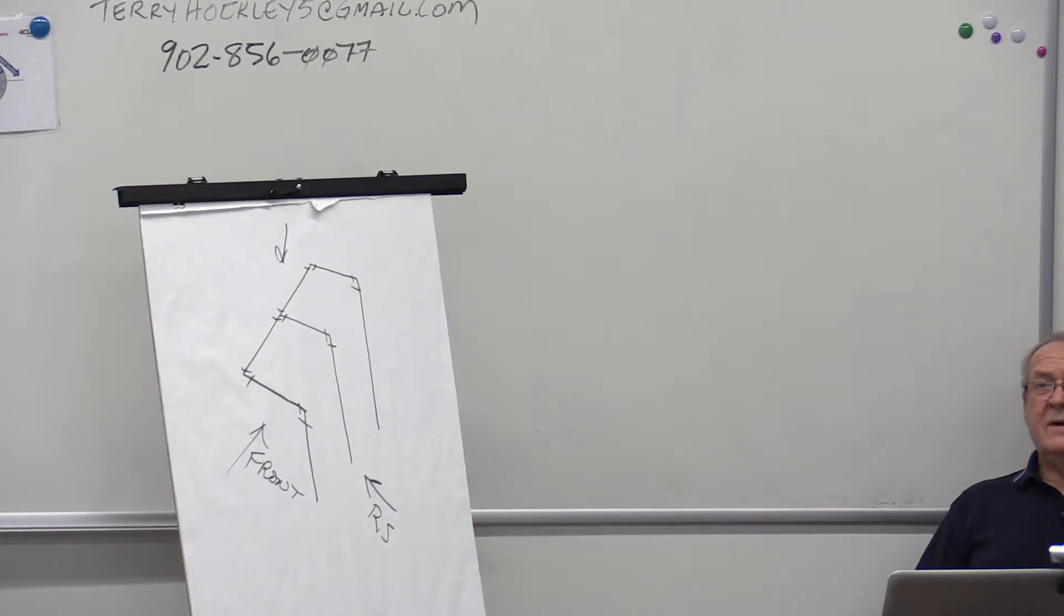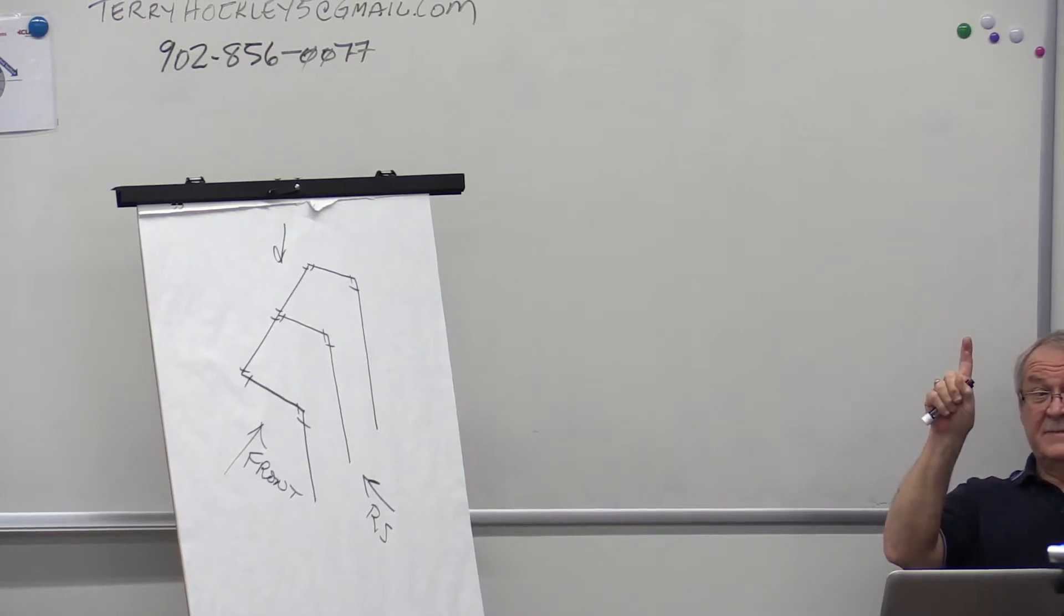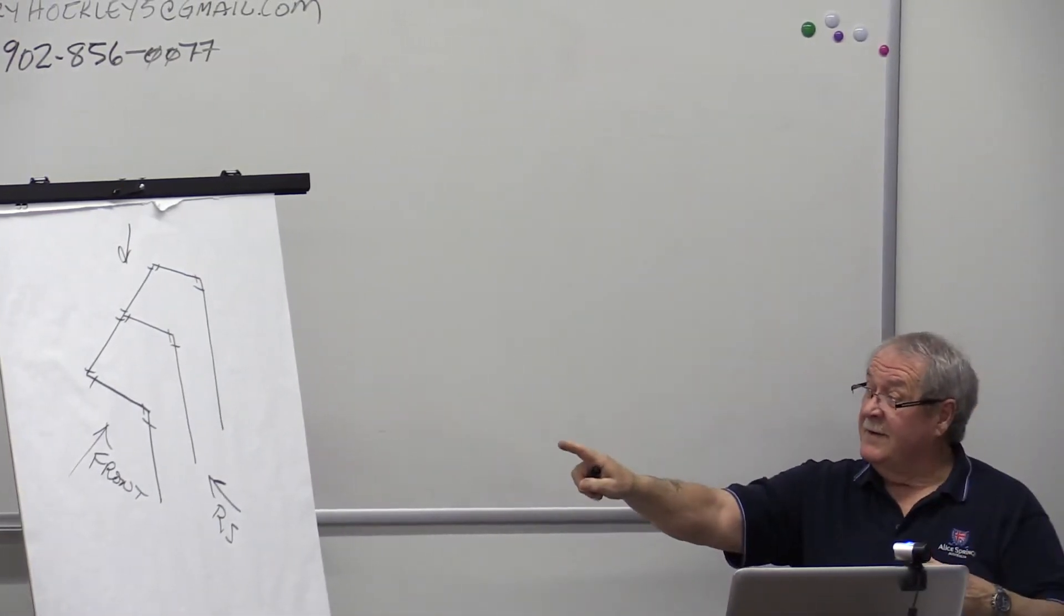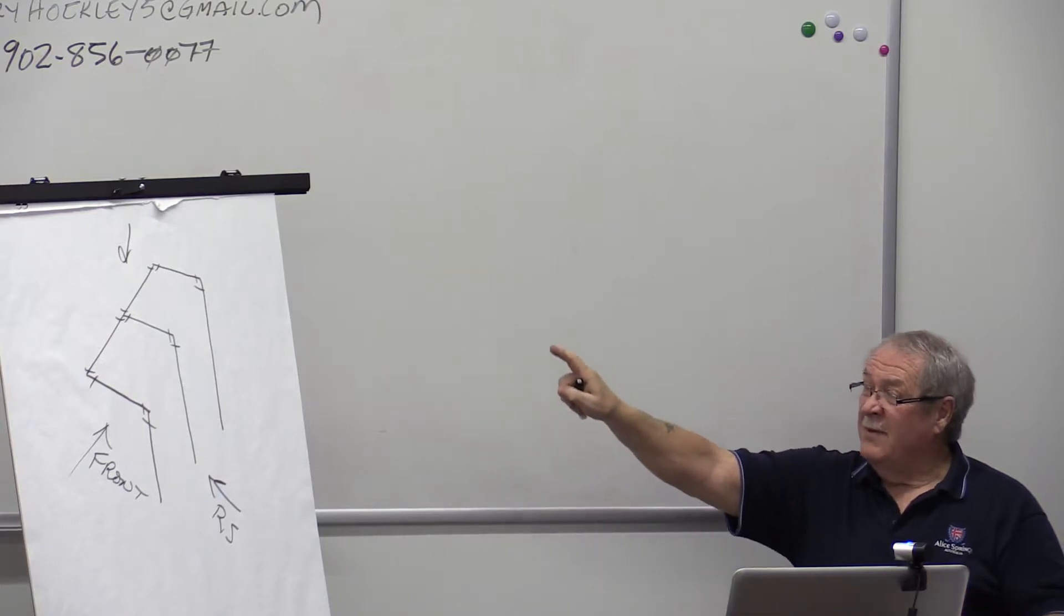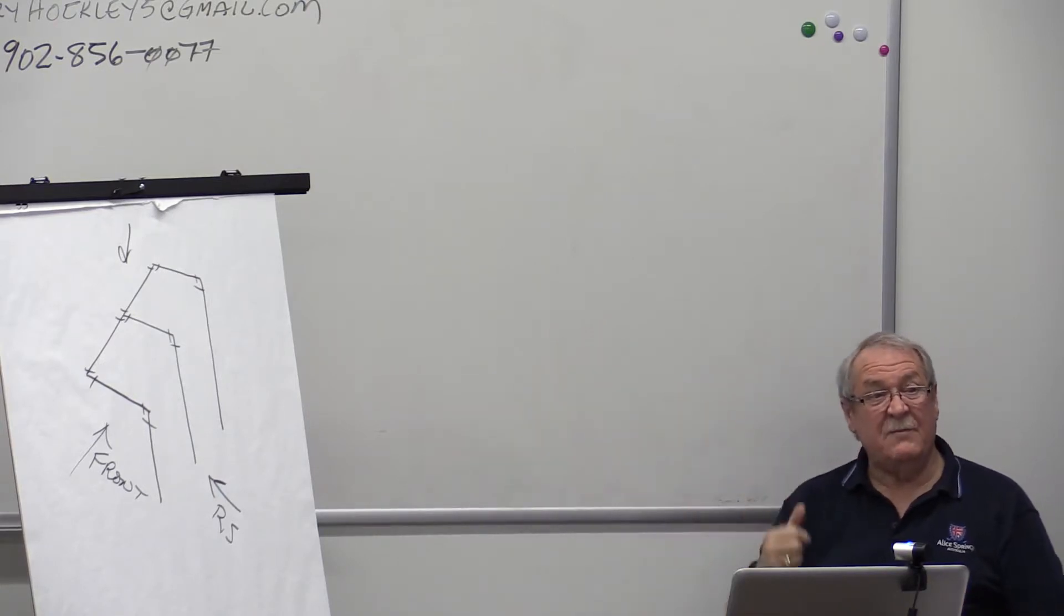What views do we use in an orthographic projection? We use three, but there are six. There is front, right side, top, and back, left side, and bottom.